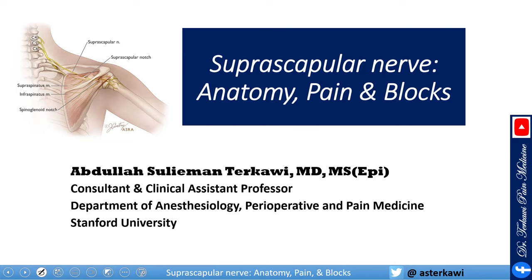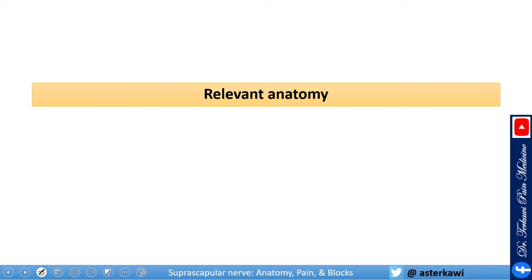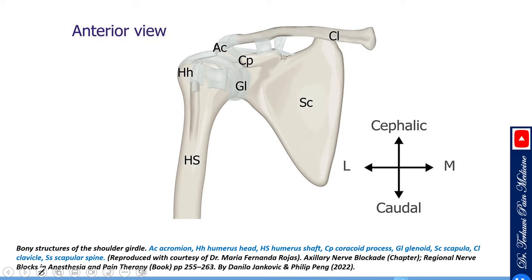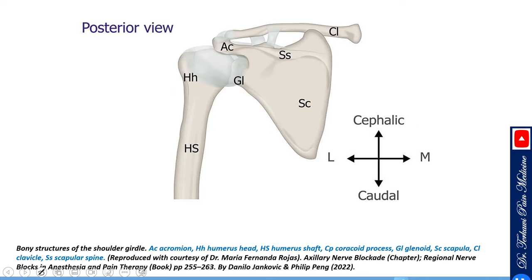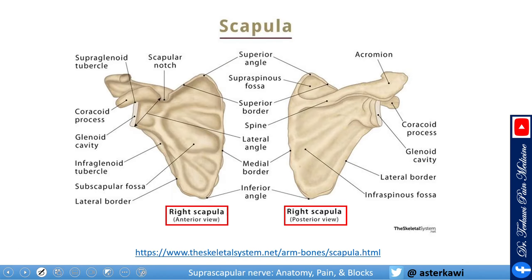Starting with suprascapular nerve anatomy, pain, and block — beginning as usual with anatomy to familiarize ourselves with a few bones of the shoulder. This is the humerus, the acromion, the coracoid process, the glenoid, the scapula, and of course the clavicle. Looking from the back you still see the clavicle, humerus, scapula, glenoid, the scapular spine, and the acromion.